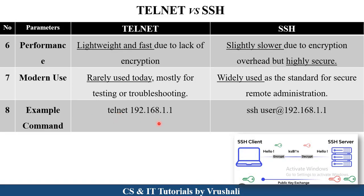In the command line interface, you use the command 'telnet' followed by the remote computer's IP address. For SSH, a different command is used that provides more security. Looking at the diagram, there is an SSH client and an SSH server. The SSH client sends a message like 'hello', which is encrypted using a private key, then decrypted by the SSH server — maintaining secured communication. This is the main difference between Telnet and SSH.